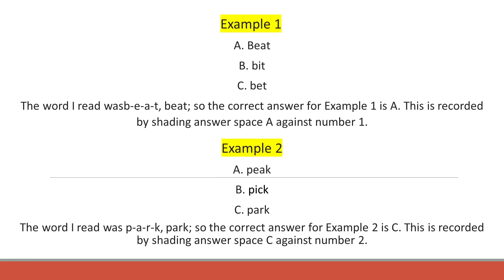Example 1. Beat. The word I read was B-E-A-T. Beat. So the correct answer for example 1 is A. This is recorded by shading answer space A against number 1.